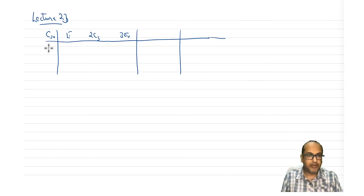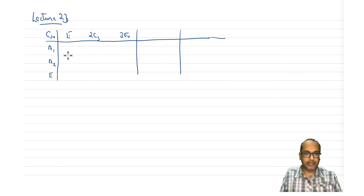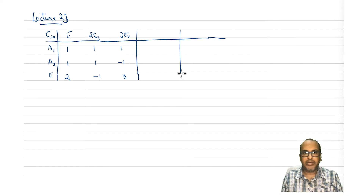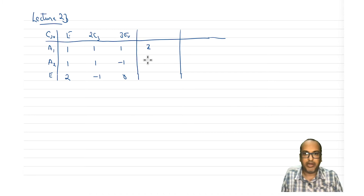For example, here you would find written some characters like A1, A2, E in this case — mostly A, B, E with some subscripts and superscripts. This one we are aware of already. And here you will find some X, Y, Z written on it, which is the basis set — that also we have some idea about.